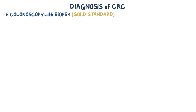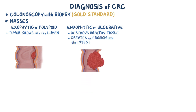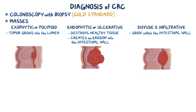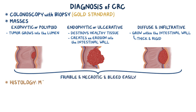A colonoscopy with biopsy is the gold standard for diagnosing CRC. Most commonly, the mass is exophytic or polypoid, meaning the tumor grows into the lumen. But it can also be endophytic or ulcerative, meaning the tumor destroys healthy tissue and creates an erosion into the intestinal wall. Finally, some tumors are diffuse and infiltrative, growing within the intestinal wall and causing it to become thick and rigid. All of these tumor types can be friable and necrotic, and can bleed easily. On histology, most CRCs are adenocarcinomas, meaning they arise from the cells lining the intestinal glands.